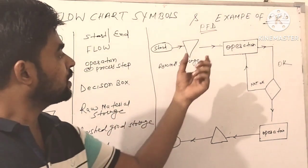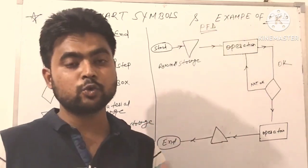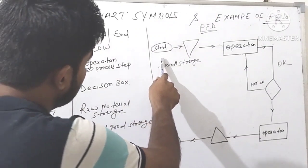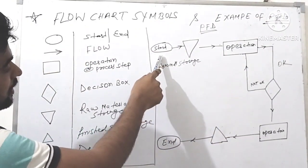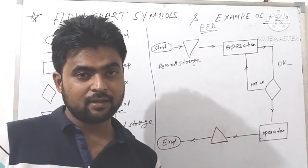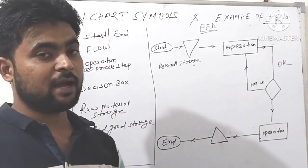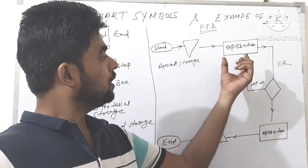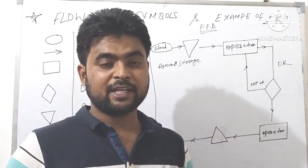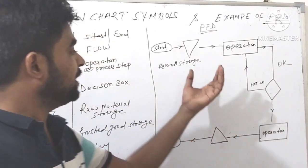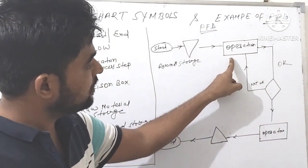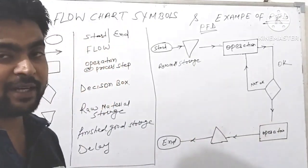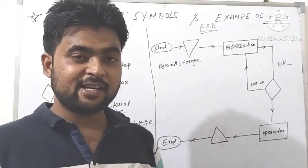Now we know about the process flow diagram — how to make it. Suppose the process is starting here, so we use the start symbol. After that, I receive raw material, so we keep it in the storage room and use the raw material storage symbol. After that, we process the material, so we use the rectangle operation symbol. And after the operation, after processing the material, we check whether the material is okay or not.